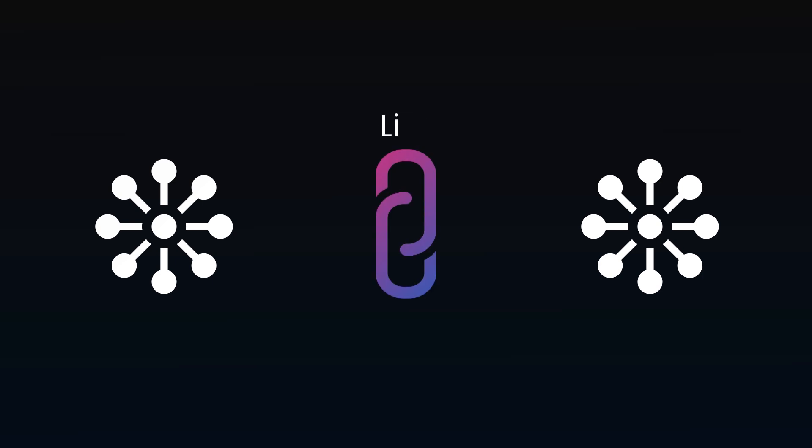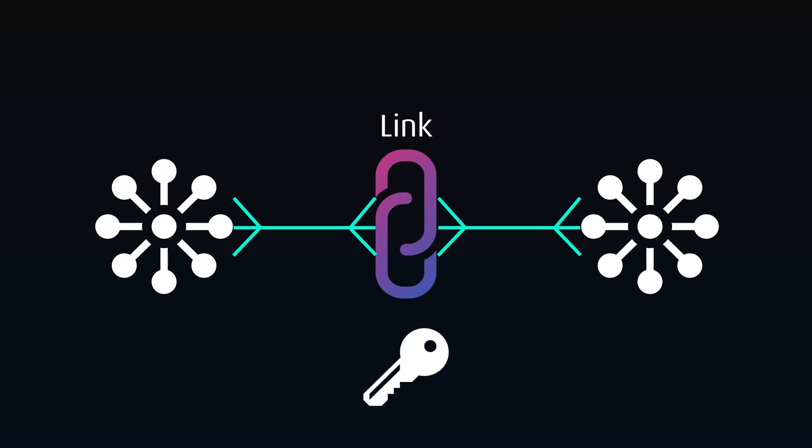Hubs are connected through link tables. These contain associations or transactions between hubs and are often many-to-many joins. They also contain keys and the metadata relating to those keys.